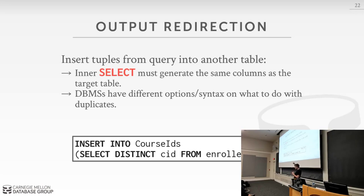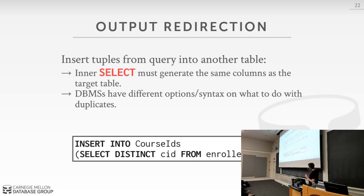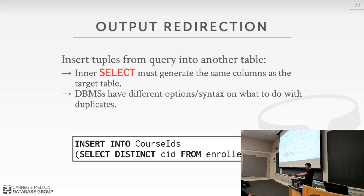If the SELECT produces four columns but the target table has three, the system throws an error. Things get complicated when the table has constraints — like a primary key preventing duplicate student IDs — and the INSERT query tries to add duplicates. Some systems immediately throw an error and write nothing; some keep going and ignore failures; others insert successes and skip failures. The SQL standard defines the syntax, but implementations vary widely.